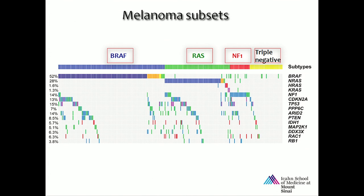A small number — about 14% — have NF1, neurofibromatosis 1 gene, a tumor suppressor and negative regulator of PI3 kinase. And then a fourth category called triple negative where you don't find any of these mutations. BRAF and RAS mutations are typically mutually exclusive for the majority of cases, because they both activate the MAP kinase pathway — so there's no reason to have both.